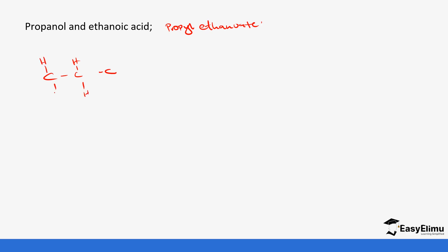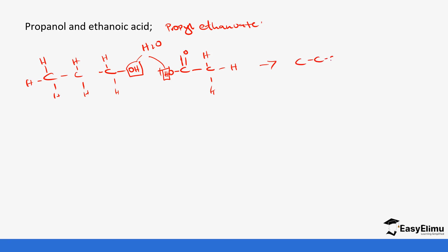To show this with a structural diagram, draw propanol with three carbon atoms — make sure each carbon is fully bonded with four bonds. Then react it with ethanoic acid, placing the carboxylic acid unit on the side so you can see how it reacts. The OH of the alcohol reacts with the H of the acid to form water, and the remaining parts combine to give the alkyl part from the alcohol — which is propyl — and the alkanoate part from the acid.